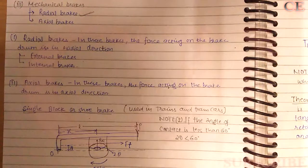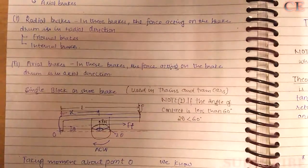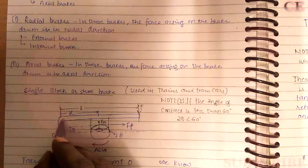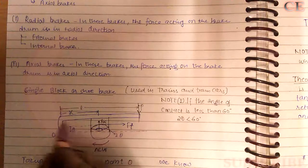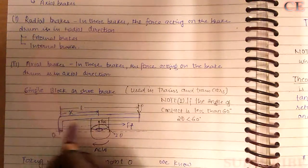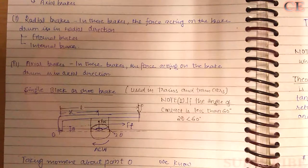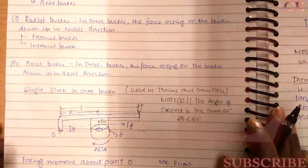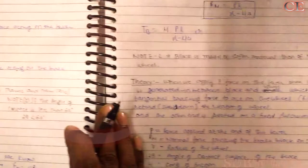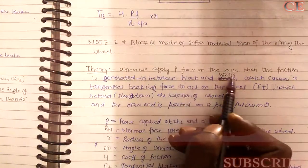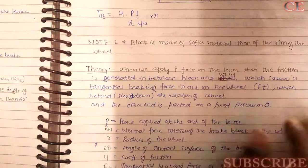Now let's see what a single block or shoe brake is. There is a fulcrum — a fixed point — and a lever pivoted at that point, upon which a force P is applied. Let's look at both the diagram and the theory together.